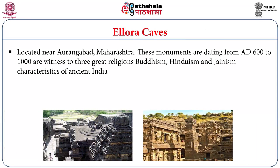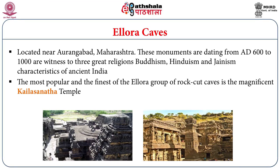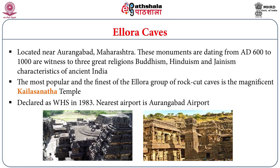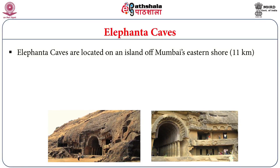Ellora Caves is one of the oldest and well-known world heritage sites located in Aurangabad in the state of Maharashtra. These monuments date from 608 to 1000 AD and are witness to the three great religions — Buddhism, Hinduism and Jainism — in ancient India. The most popular and finest of the Ellora group of rock-cut caves is the magnificent Kailashanatha Temple. This particular site was declared as a World Heritage Site in the year 1983, and the closest airport is Aurangabad.